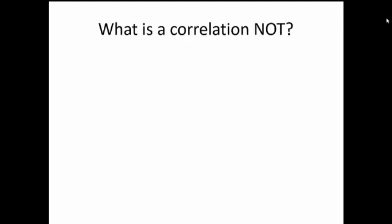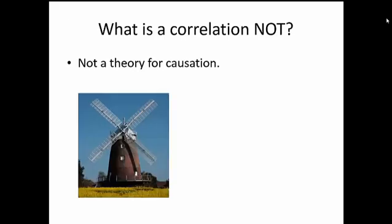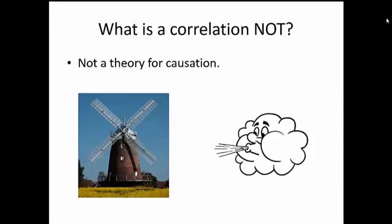So what is a correlation not? The correlation is not a theory for causation. Of course, this is heard many, many times, but keep in mind, correlation is not causation. So for example, when windmills turn, wind increases. Therefore, windmills turning causes wind. This is of course not the case. In fact, it is the opposite. As the wind blows, the windmills begin to turn.